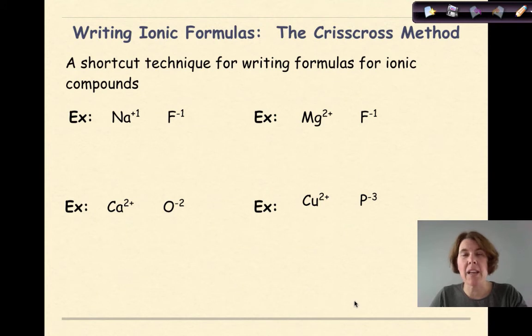The other way of doing it is the one that I like, which is known as the Criss Cross Method. This is a shortcut technique for writing formulas for ionic compounds. So let's look at our first example here. Na plus one, F minus one. I have a plus one and a minus one. Now they're going to cancel each other out. So when I write these, this is just NaF. And they're in a one to one ratio. So these could have subscripts of ones down here. But we don't need to put those in because those are assumed.